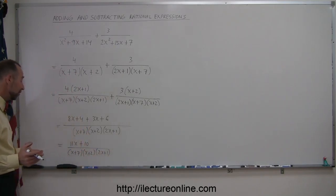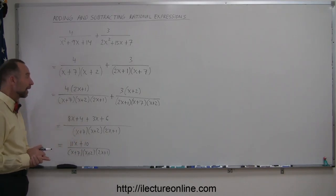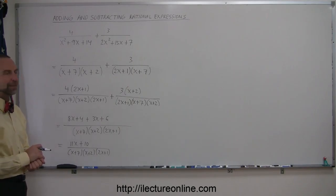And divided by x plus 7 times x plus 2 times 2x plus 1, and that's the final answer, because I cannot simplify anything, I cannot factor anything from the numerator, so that's the final answer for this one, and that's how you do that, so let me show you a few more of these examples.